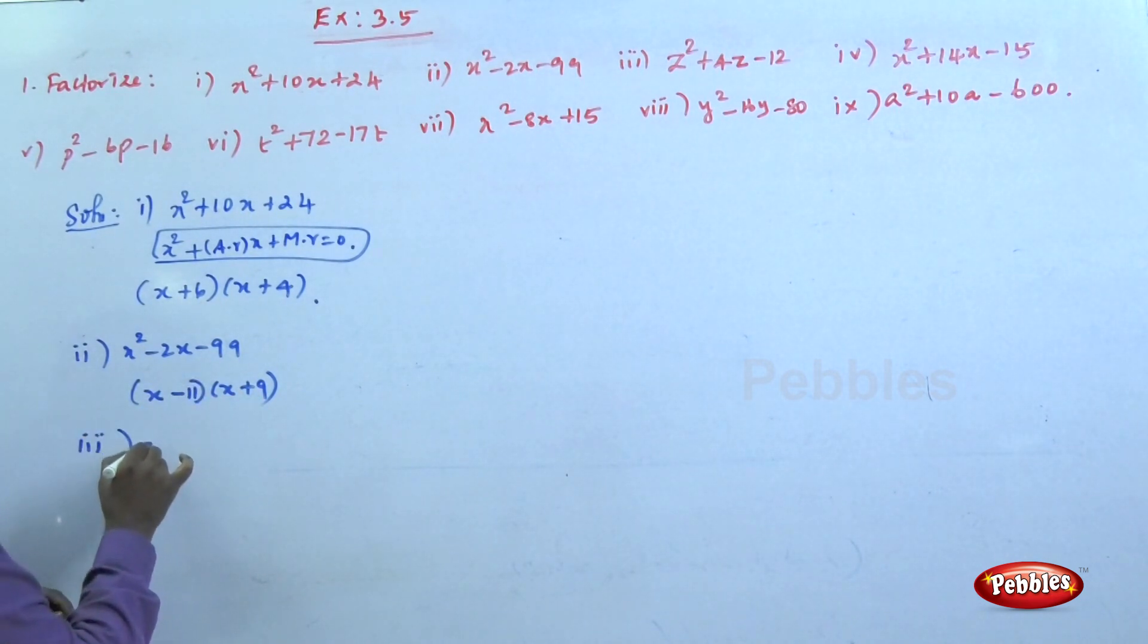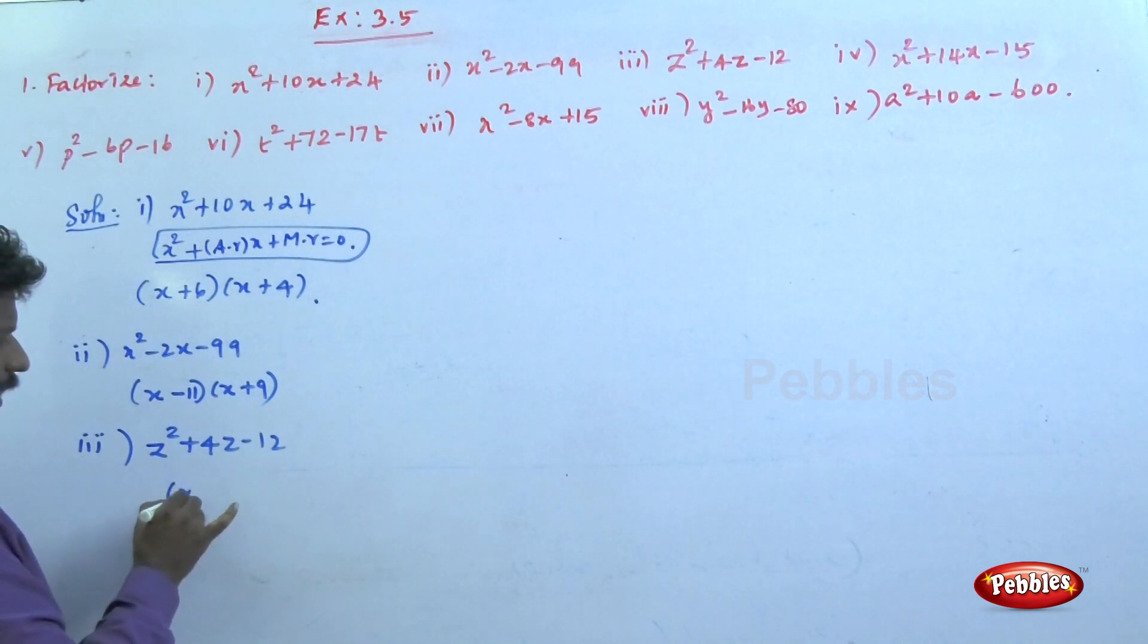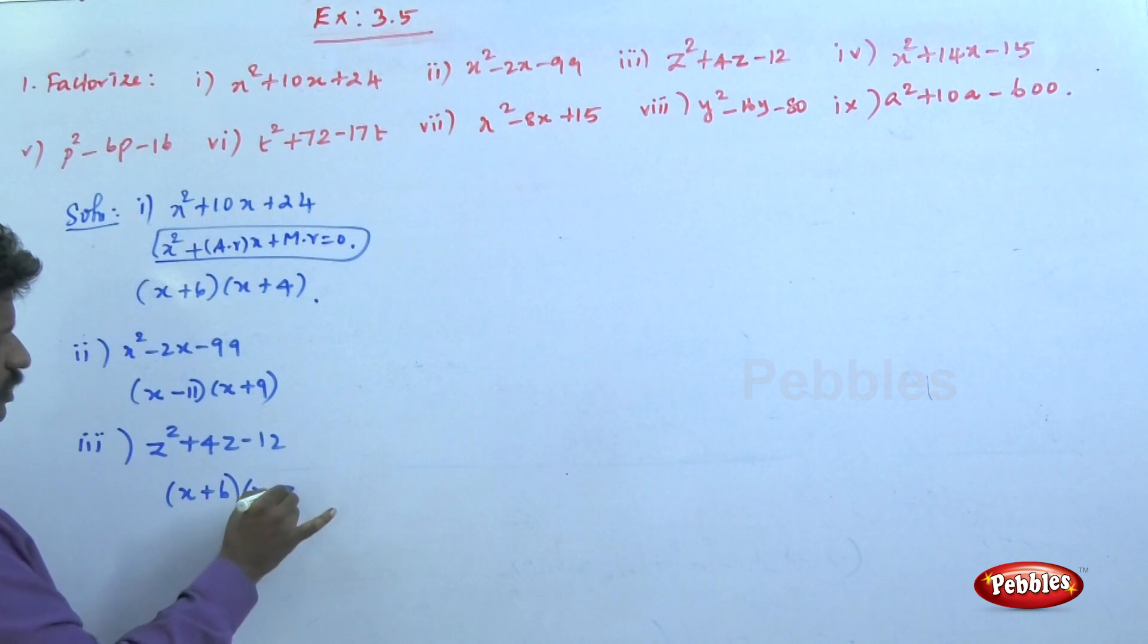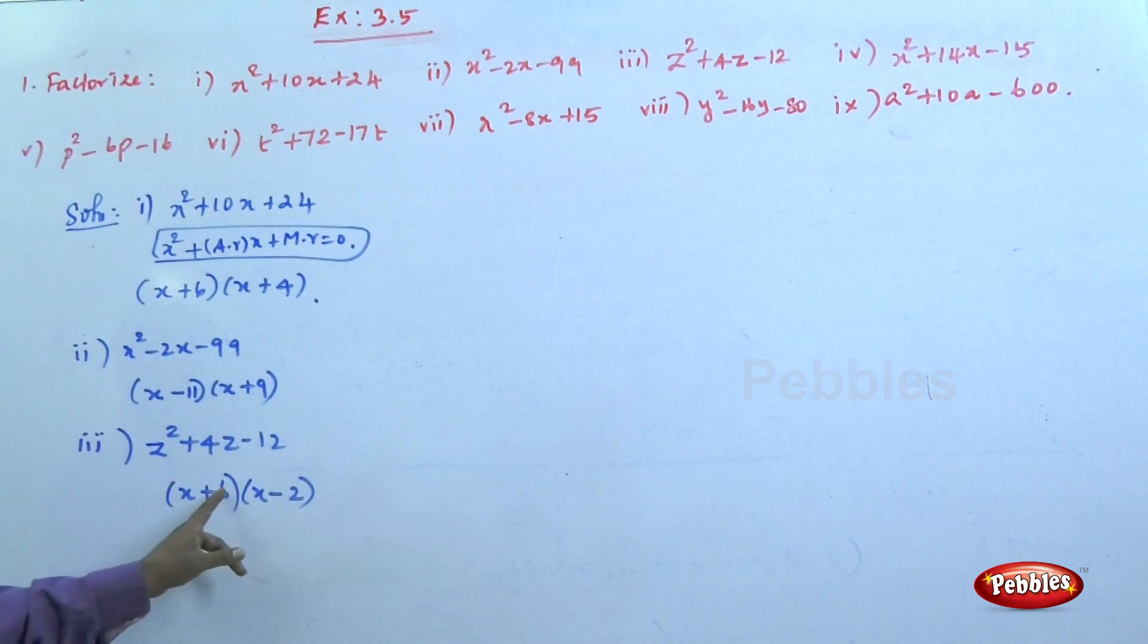The third question: x² + 4x - 12. The factors are (x + 6)(x - 2). 6 - 2 = 4, 6 × -2 = -12.